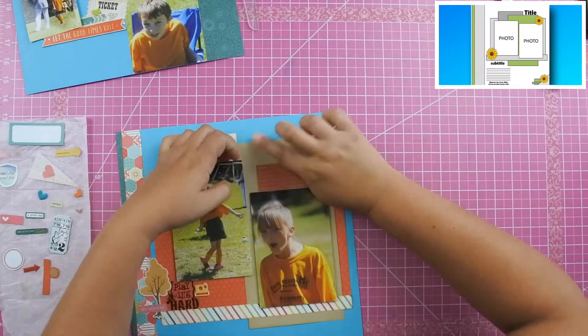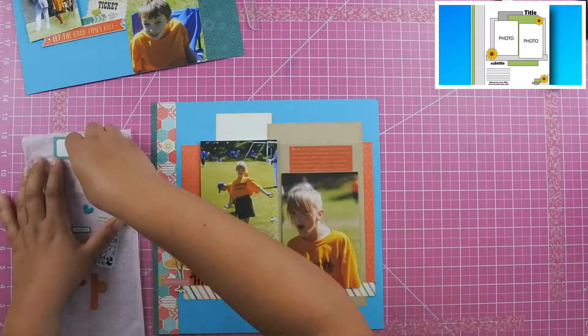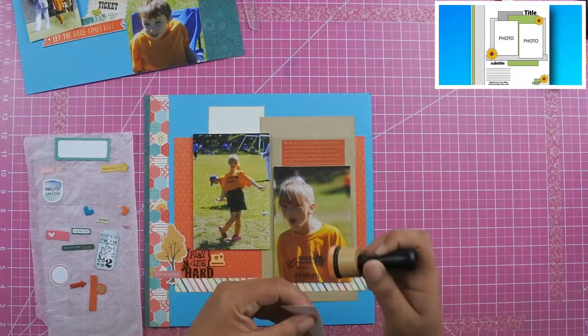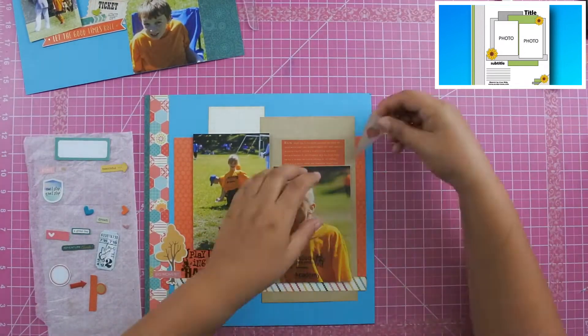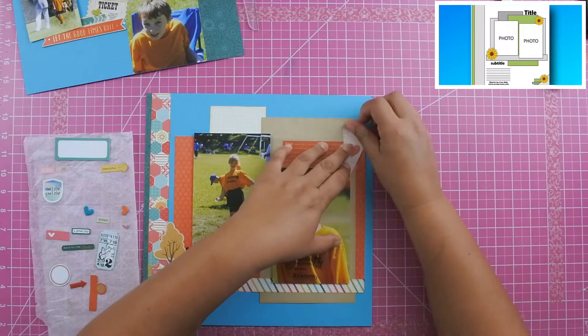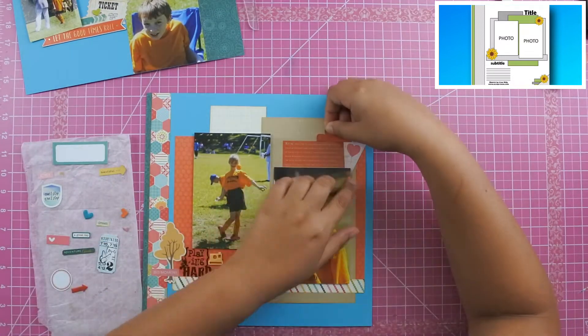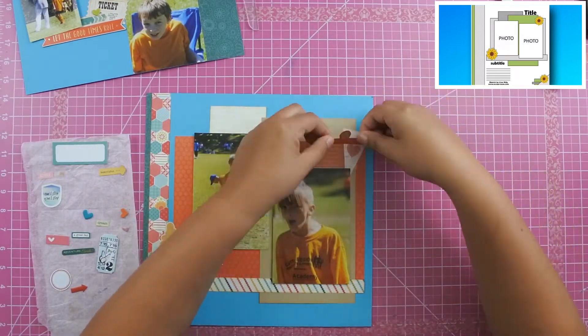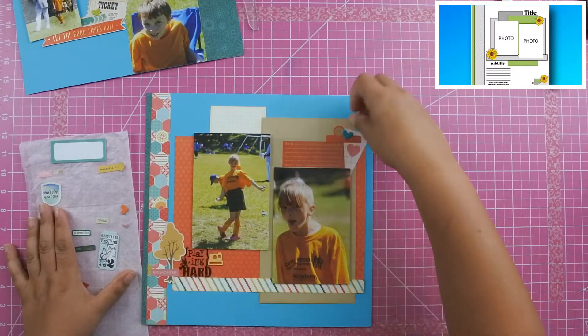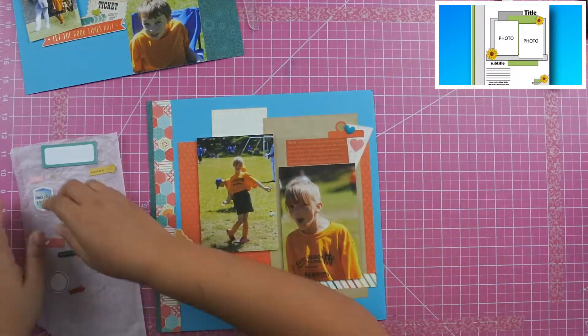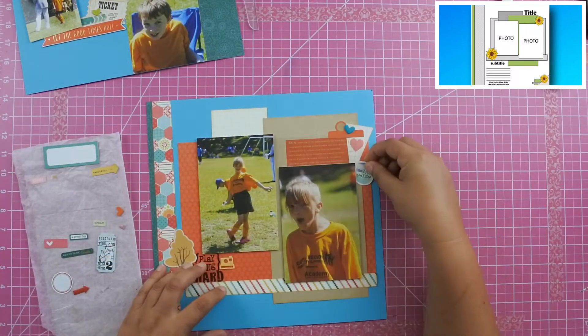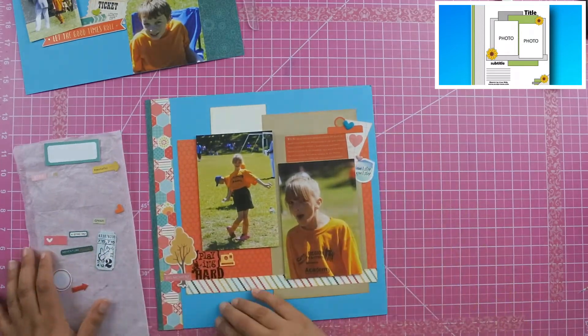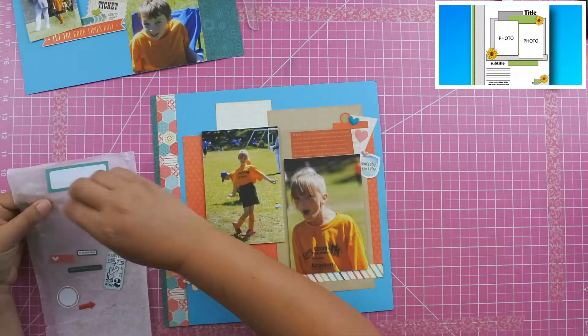I had this clear sticker which I've had in my stash forever. I really think that I got these when I first started scrapbooking because it was those clear books that we used to get that had tons and tons of stickers. This one was about boys playing, so it just has the word Run and then it has the definition like it would be in the dictionary. It tells you there's like four different definitions for it. I really like that because that's what she's doing, is running around in soccer.